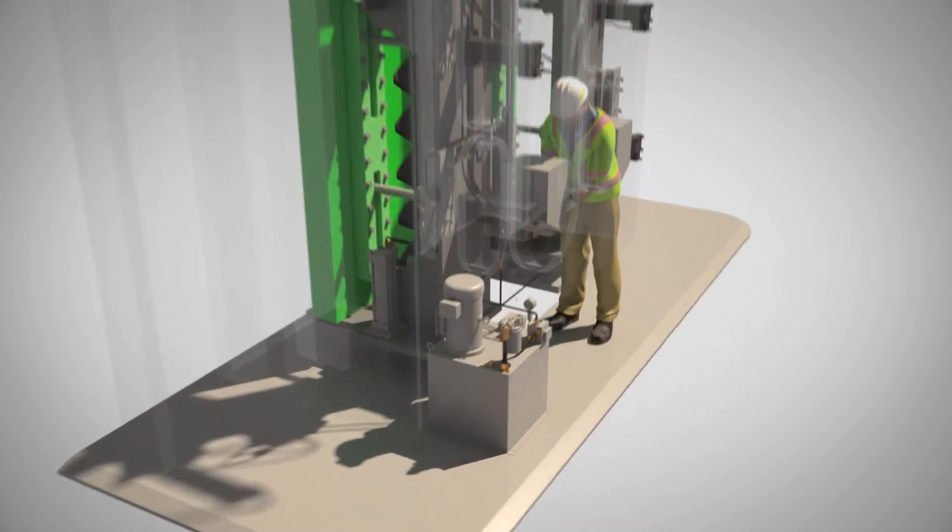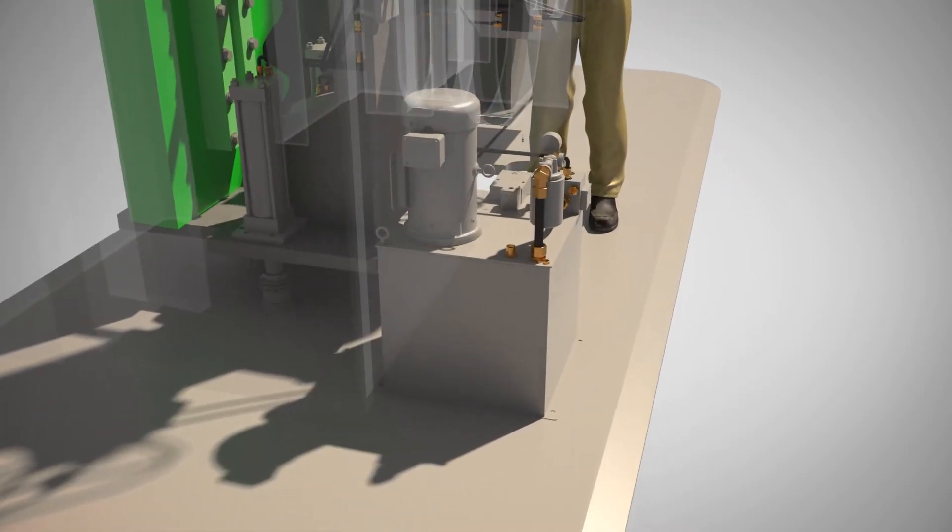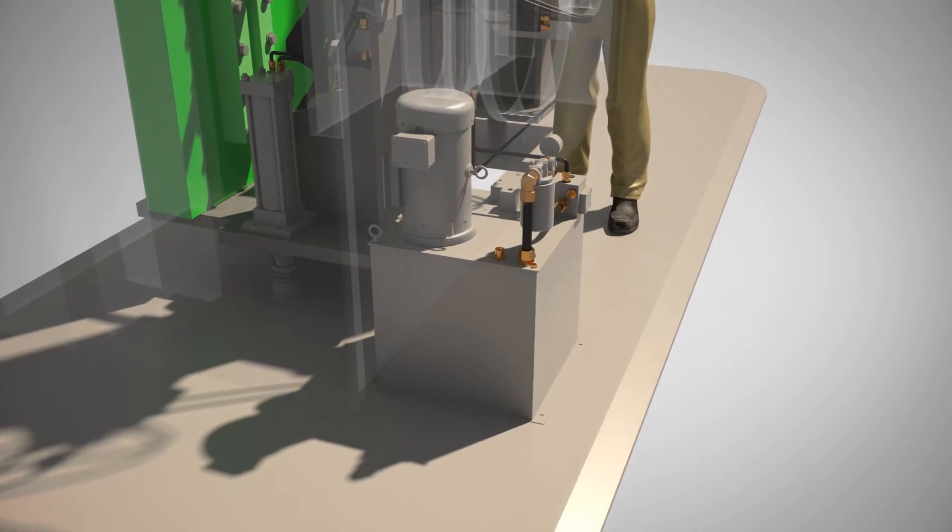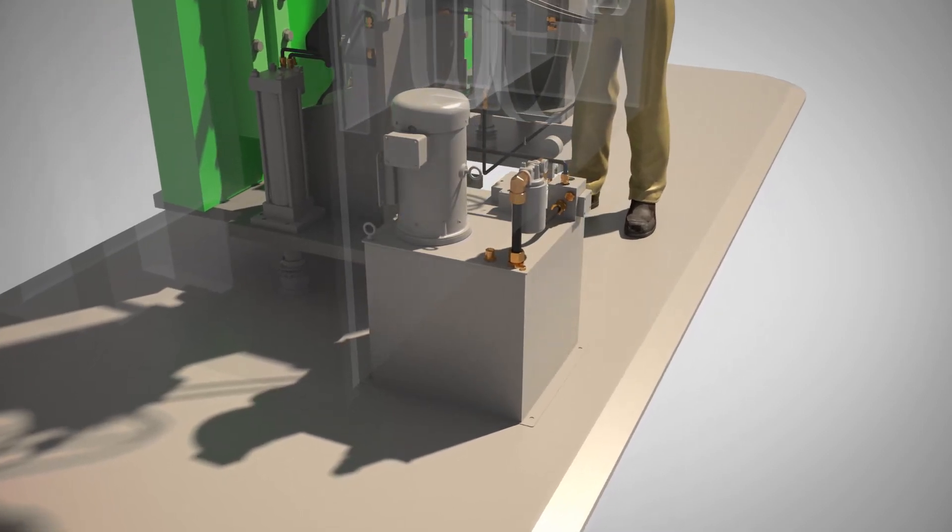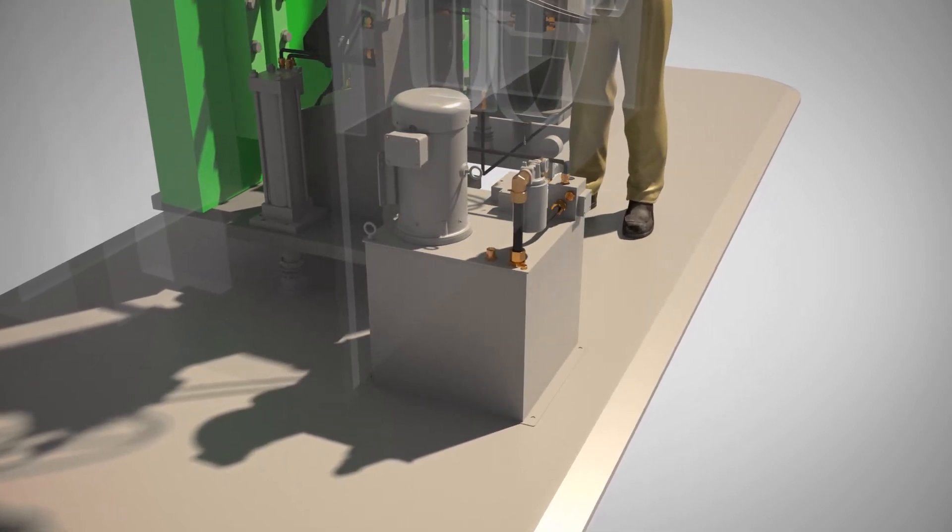To ensure fail-safe operation, counterbalancing valves are incorporated into the hydraulic system, so that if at any time a line breaks, adequate pressure is maintained in the system.